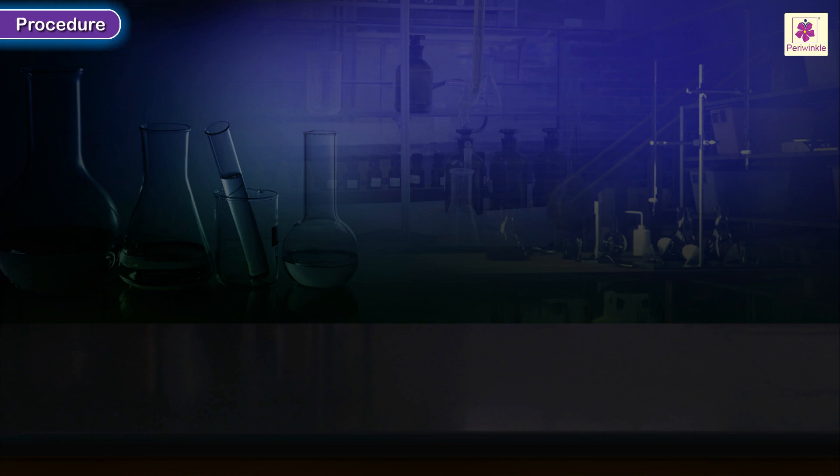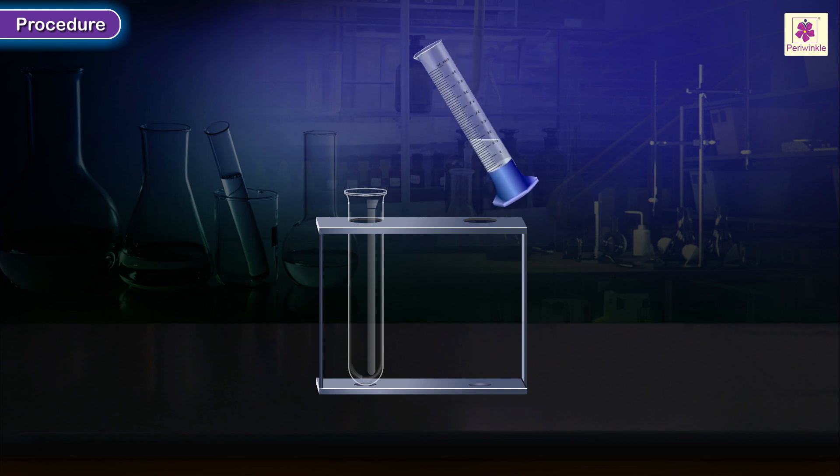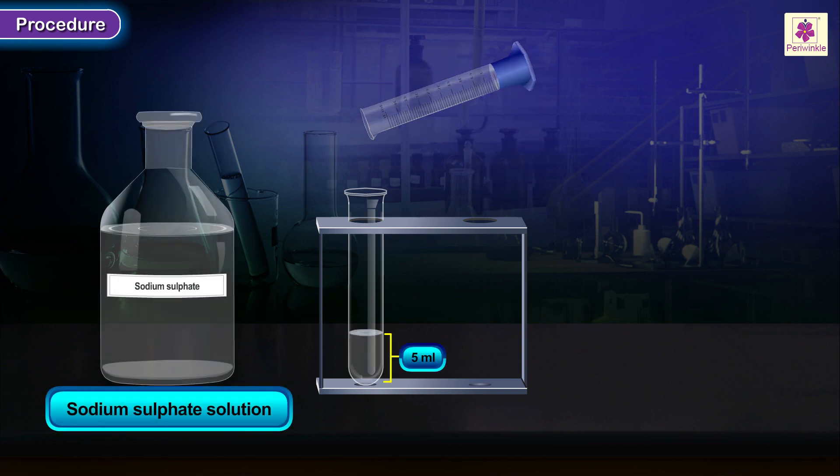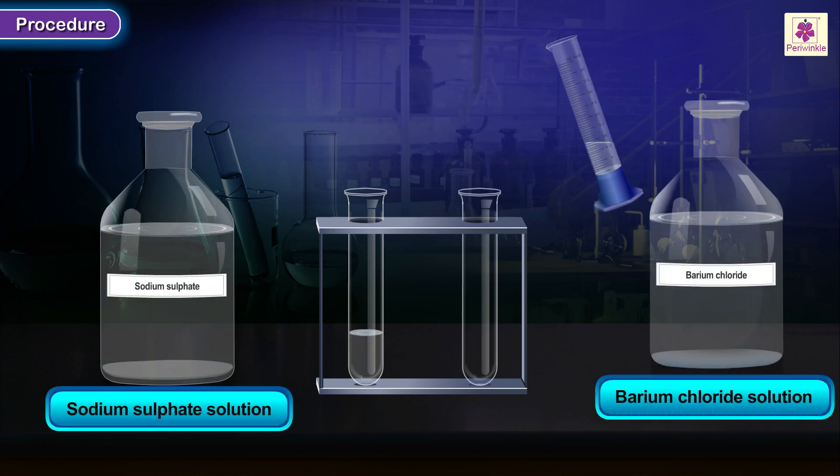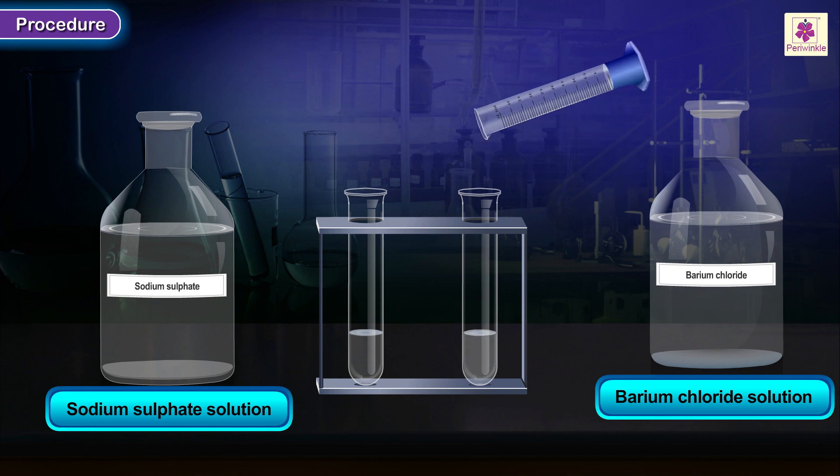Procedure: Take about 5 ml of solutions of sodium sulfate and barium chloride into separate test tubes and label them respectively.